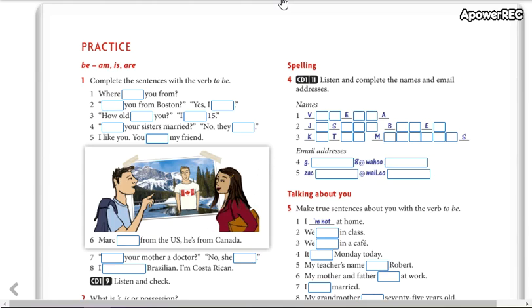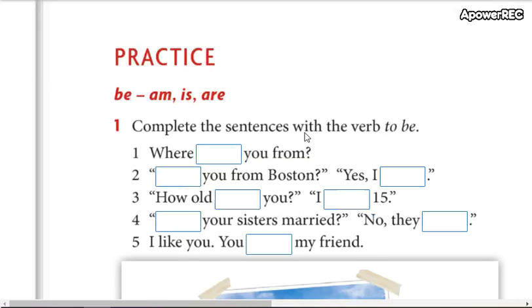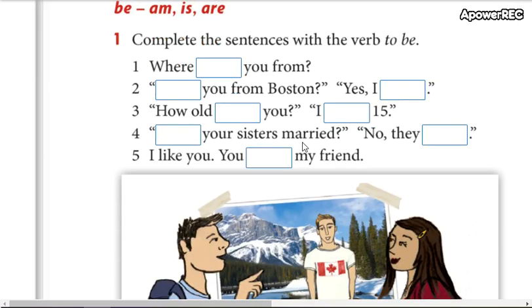Here we have a practice. Are you on page 5? Okay, here we have 'be.' We're dividing 'be' into am, is, are. Remember they have the same meaning — am, is, or are. So you're going to complete the sentences using the verb to be, using am, is, or are.